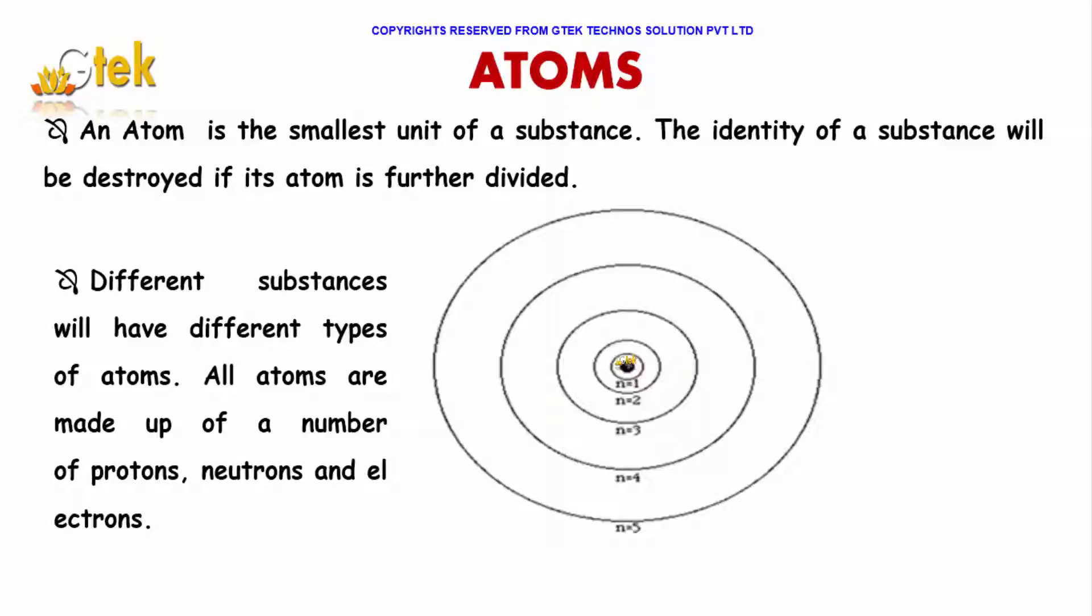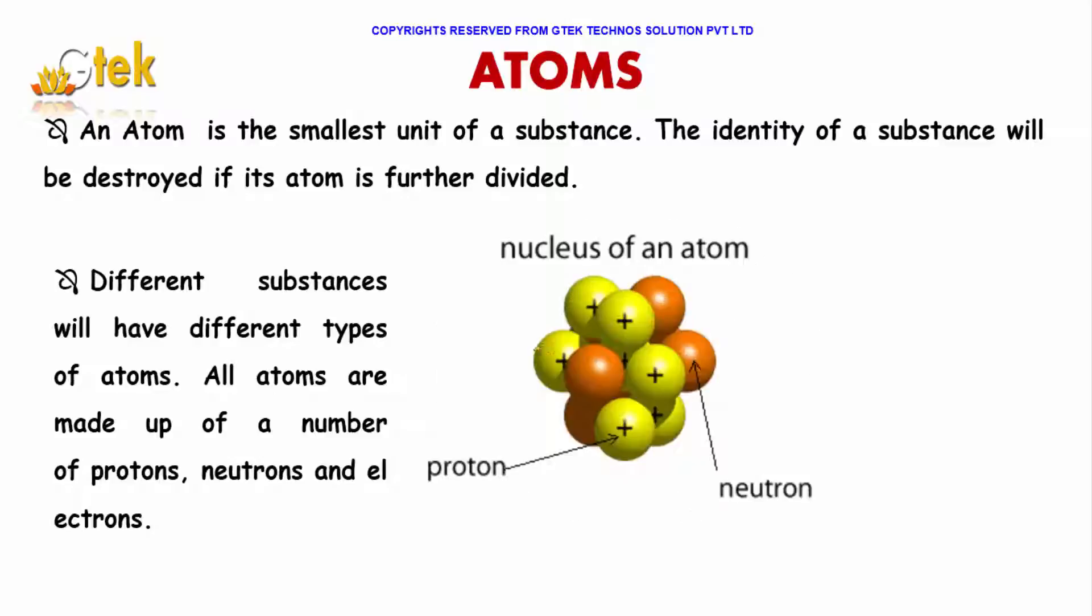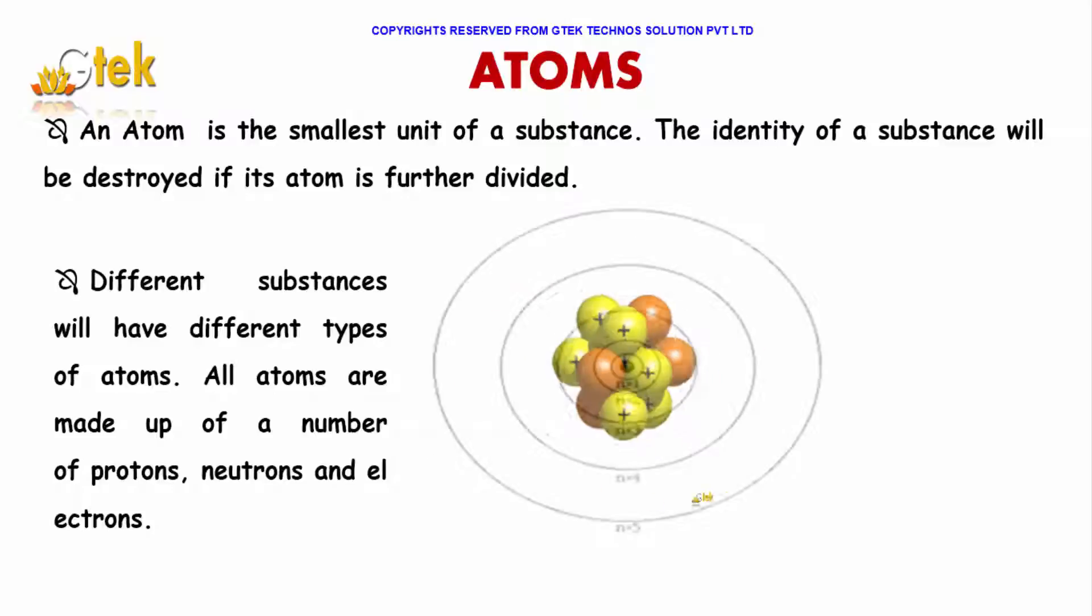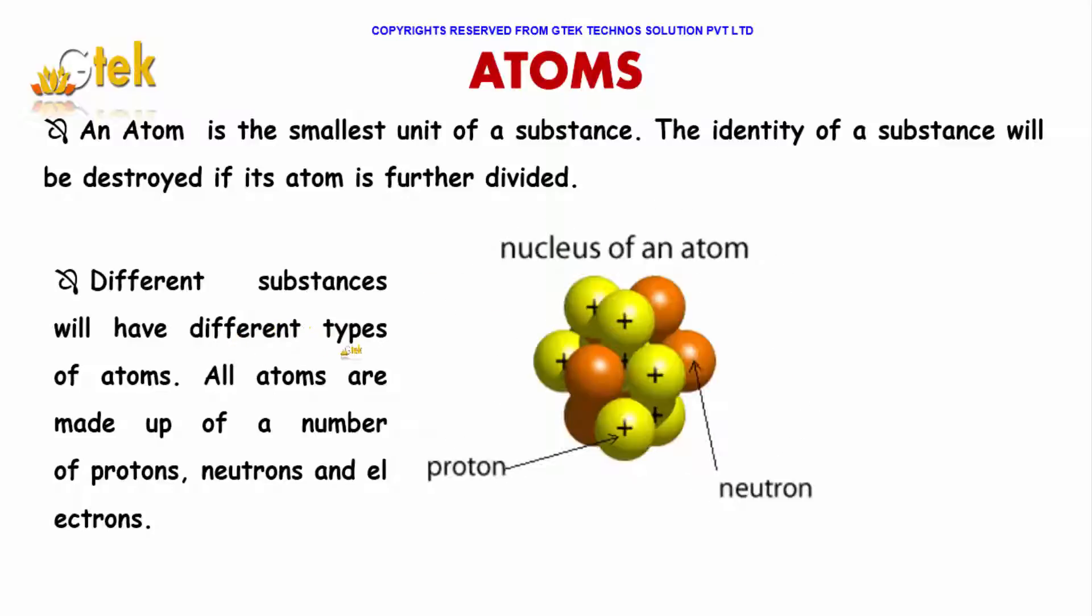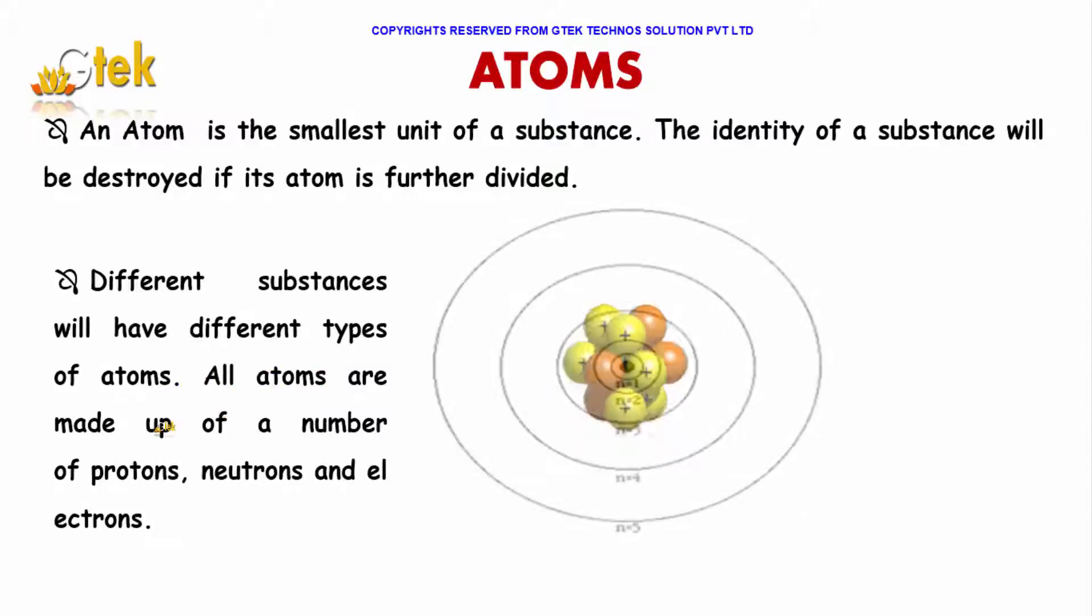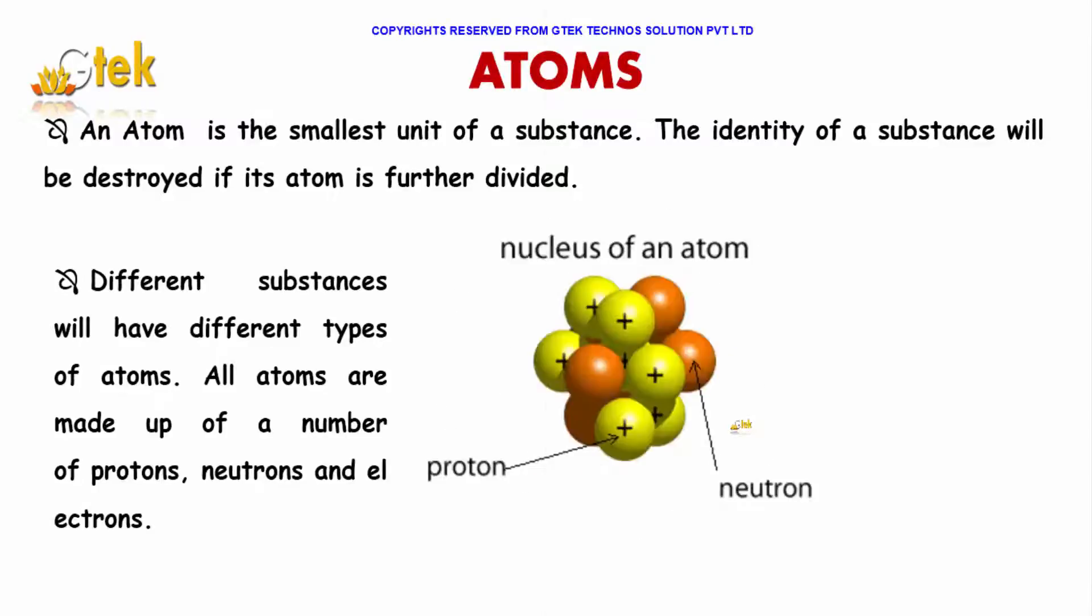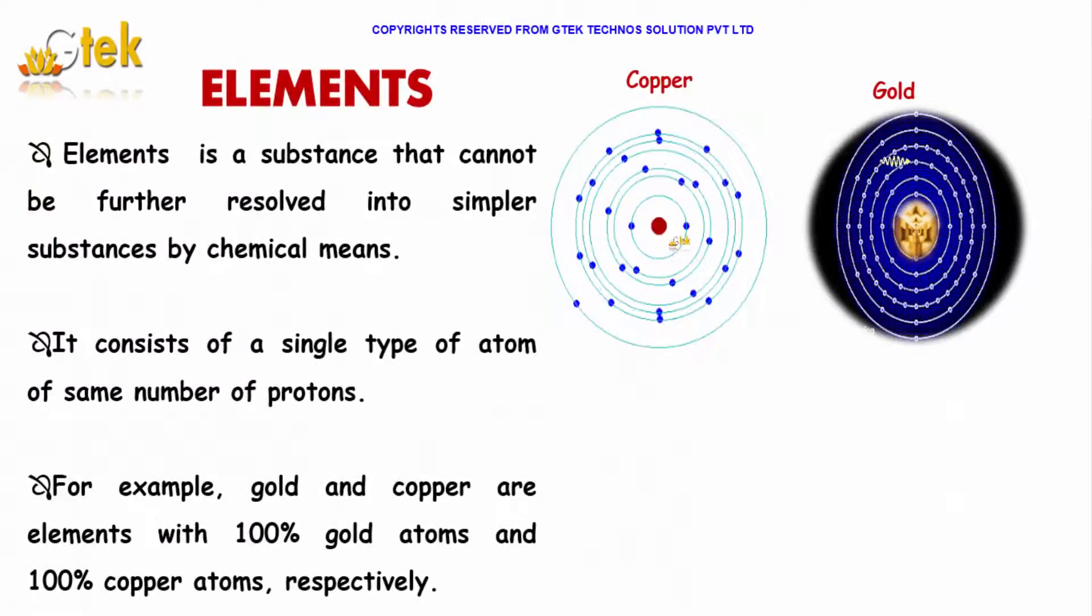An atom will be having the protons, neutrons and it is surrounded by electrons. Different substances will have different types of atoms. All atoms are made up of a number of protons, neutrons and electrons. The center part is called the nucleus.